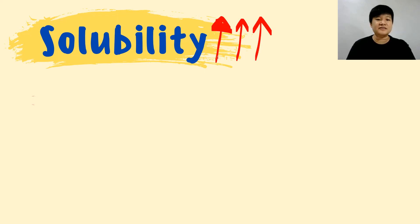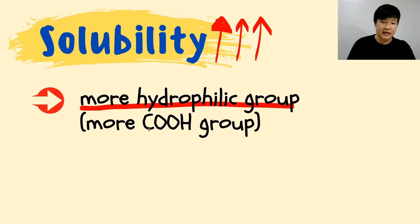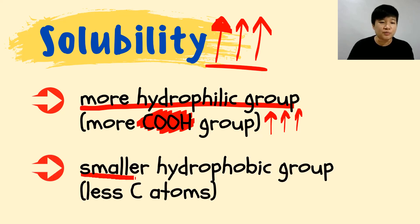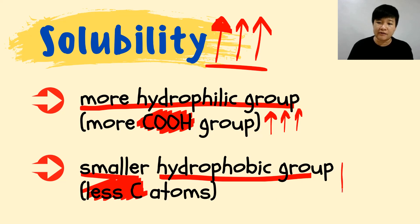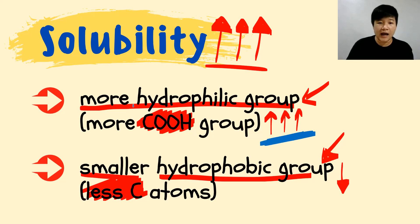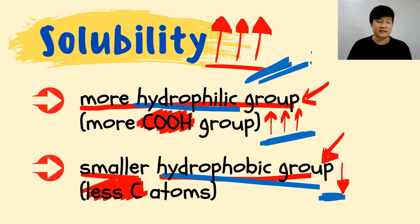So how can we increase solubility? First, you need more hydrophilic groups — in other words, more COOH groups. More COOH means more area to form hydrogen bonds with water, giving higher solubility. Alternatively, a smaller hydrophobic R group with fewer carbon atoms also increases solubility. The higher the hydrophilic group and the lower the hydrophobic group, the higher the solubility.